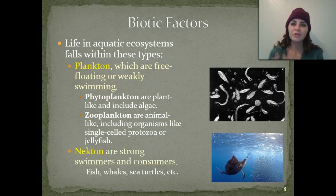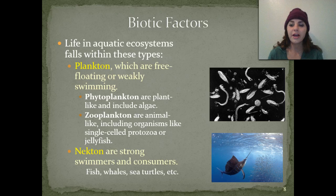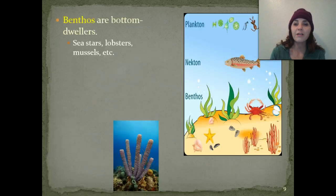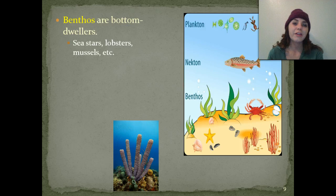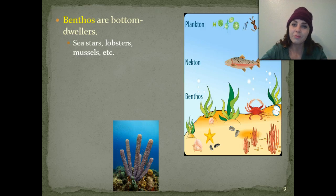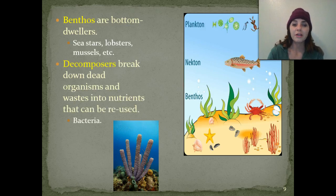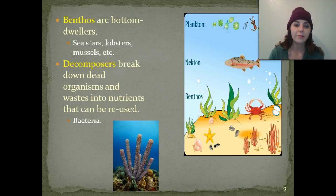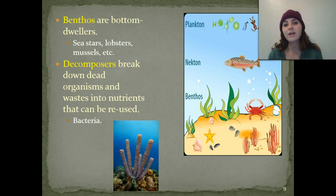We then have nekton — these are our really strong swimmers: all the different types of fish, marine mammals, whales, sea turtles. Next, we have our benthos — these are our bottom dwellers. They include sea stars, lobster, mussels, oysters — all the little critters that crawl along the ocean floor. We also have decomposers that break down dead organisms and wastes into nutrients that can be reused or recycled in the aquatic environment. Most of them are going to be bacteria. On terrestrial ecosystems we typically have fungi as well, but in the ocean bacteria are the main decomposers.